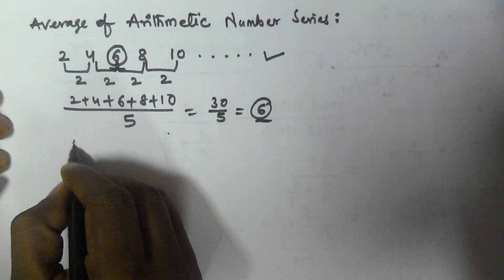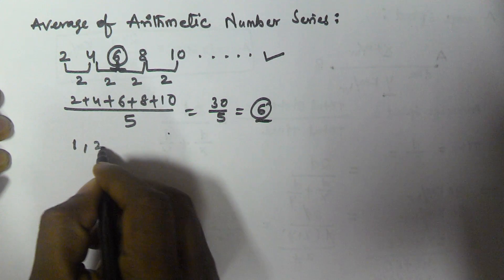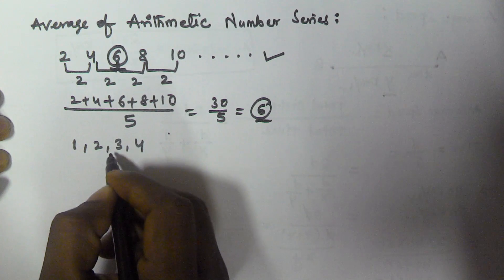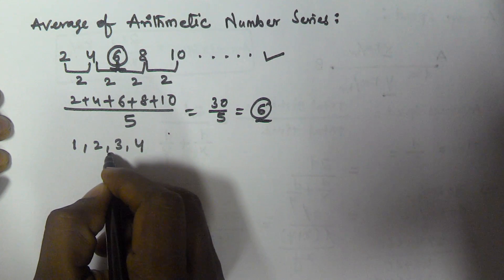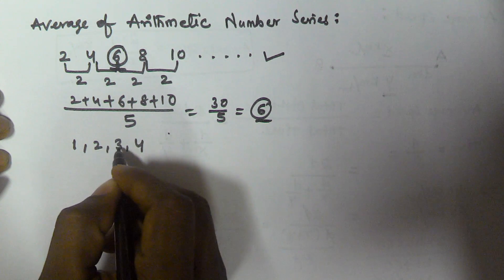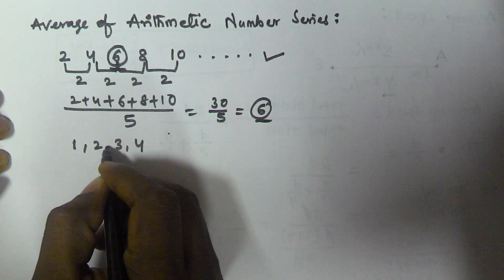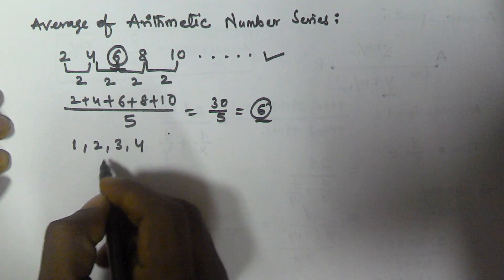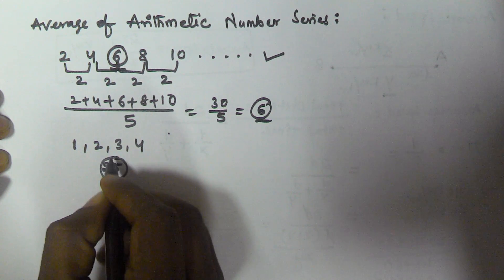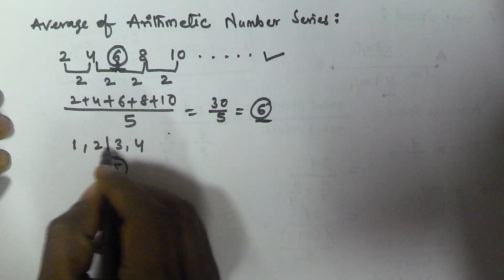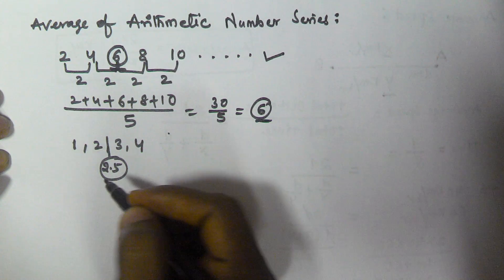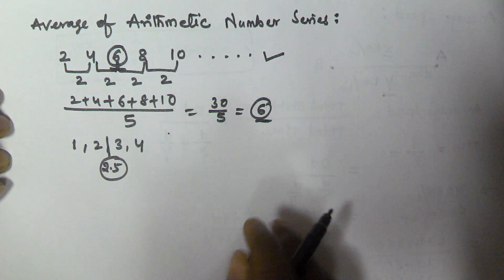Let us find the average of 1, 2, 3, 4. There is no single middle number here. The middle numbers are 2 and 3. The middle number of 2 and 3 is 2.5. So the average of 1, 2, 3, 4 is going to be 2.5.